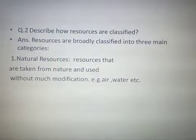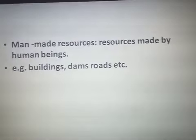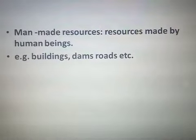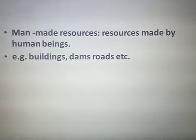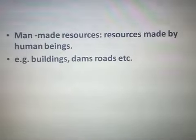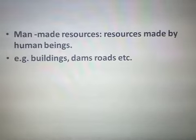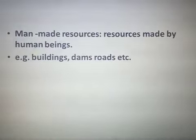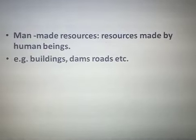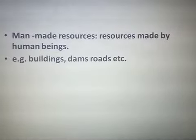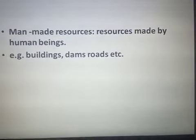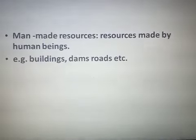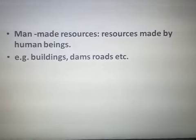The second type is man-made resources. Man-made resources are not given by nature but are made by human beings using natural resources — like buildings, dams, roads, factories, and industries. All these things are made by human beings and are very helpful, used by us to fulfill our many needs. So these resources are man-made resources.